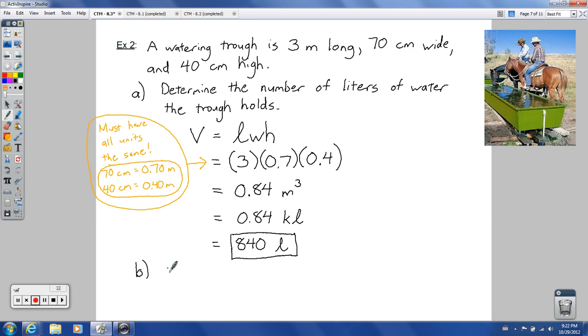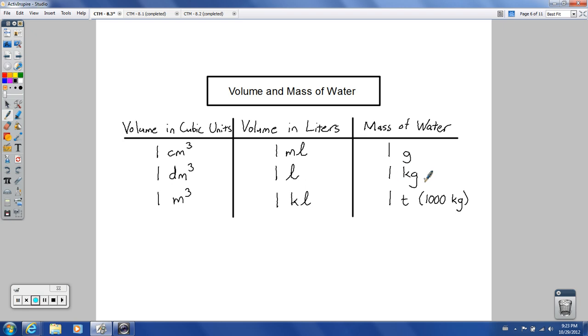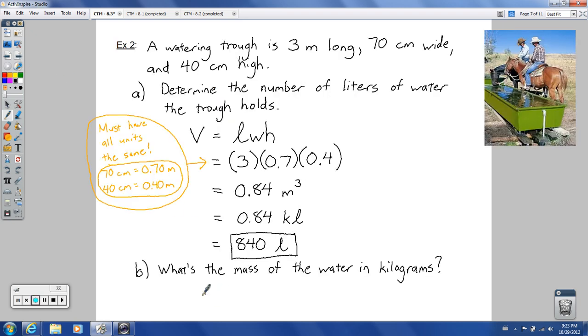And then the other question here, what's the mass of the water in kilograms? What did you just tell me? The mass of water in kilograms. We go back to this table over here. One liter was the same thing as one kilogram. Oh, my gosh. That makes this problem incredibly easy. Since one liter equals one kilogram, that would mean 840 liters equals 840 kilograms. Easy. And bada boom, bada bing, we move on to the next topic.